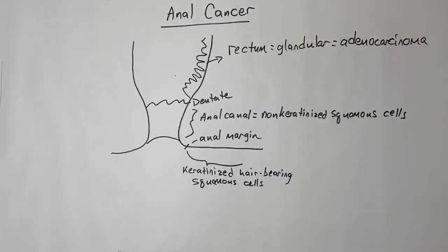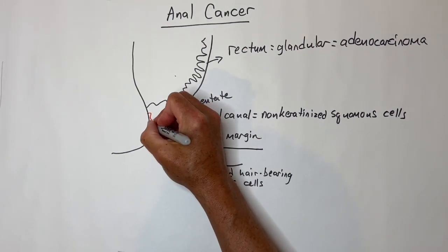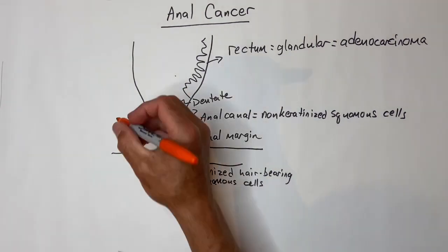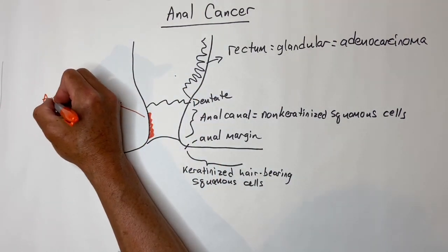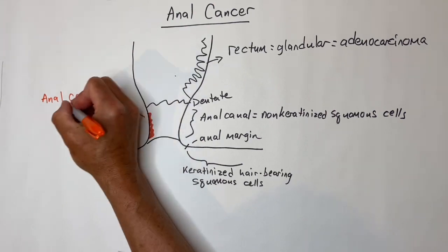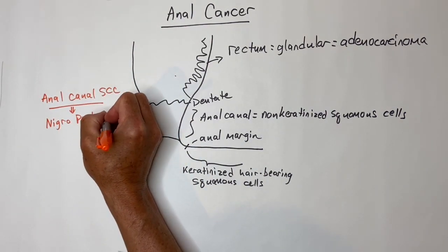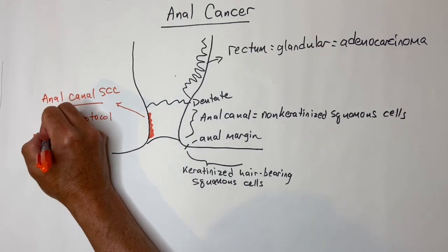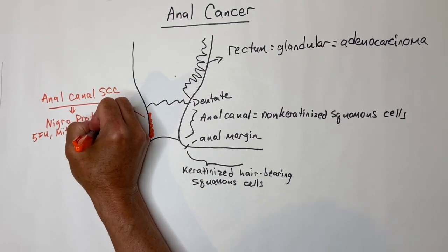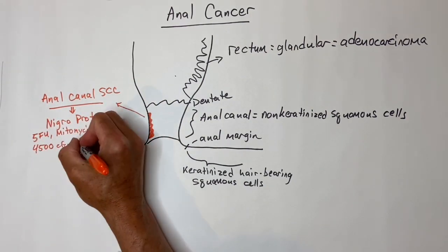Squamous cell carcinoma of the anal canal is related to HPV, so it's probably a good idea to screen women for cervical cancer also if they have this. Squamous cell carcinoma of the anal canal is usually treated with chemoradiation with something called the Nigro protocol, which is 5-FU, mitomycin C, and 4500 centigrade of radiation.